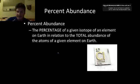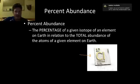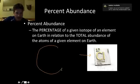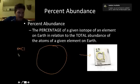Let's say that we were talking about chlorine. Let's say that all the chlorine that existed on the planet was represented by this big circle. As it turns out, chlorine has two isotopes: chlorine-35 and chlorine-37.